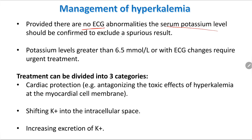A spurious result can be the most common cause of apparent hyperkalemia. Causes include sampling hemolysis due to tourniquet use, or the sample being taken from a limb with an IV fluid containing potassium.